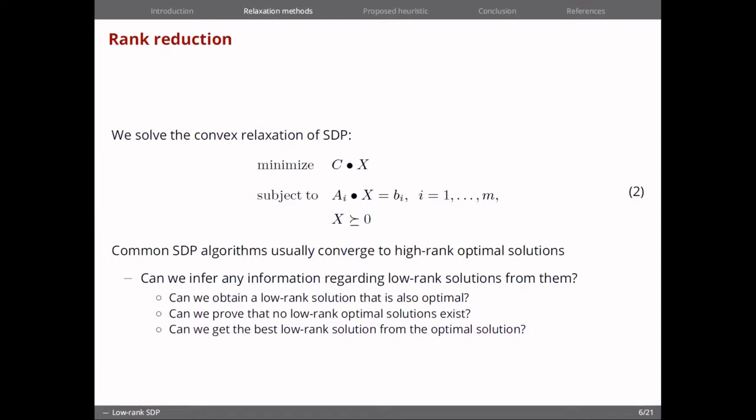So what we ask ourselves here is, can we infer any information regarding low-rank solutions from this? In particular, can we obtain a low-rank solution that is also optimal? Can we prove that no low-rank solution exists? And can we get the best low-rank solution from the optimal solution?